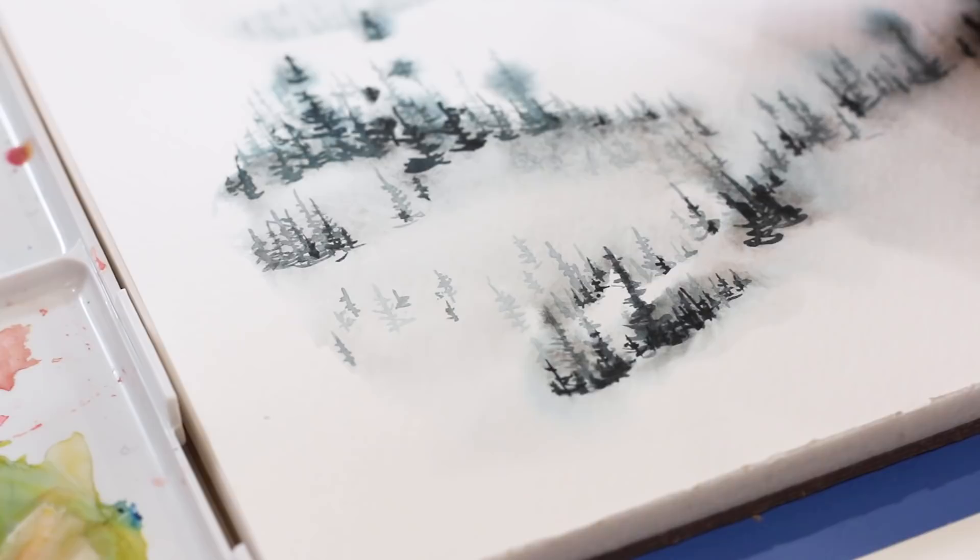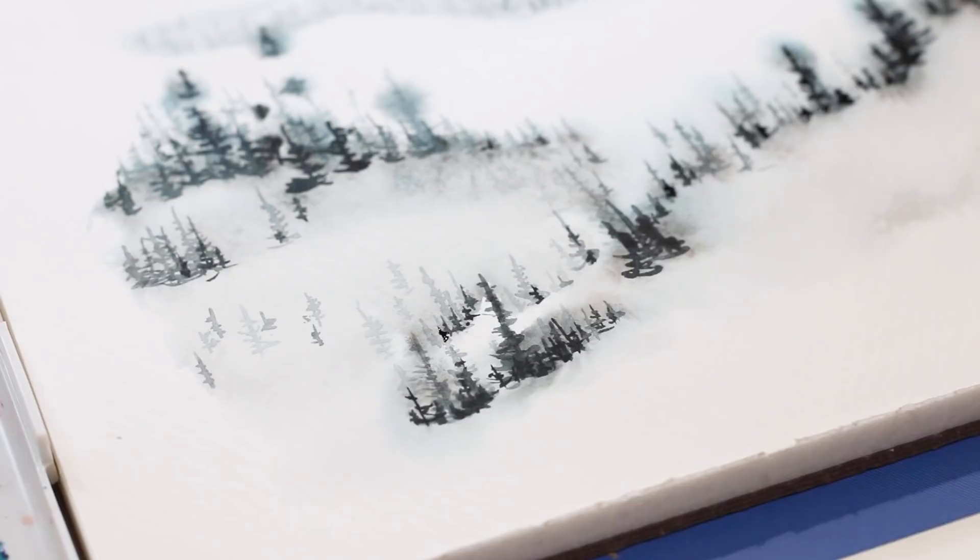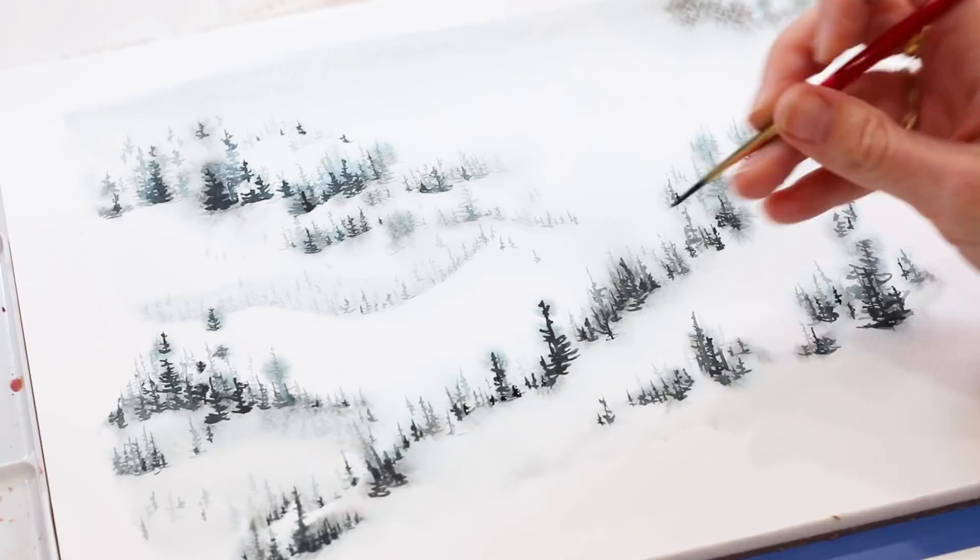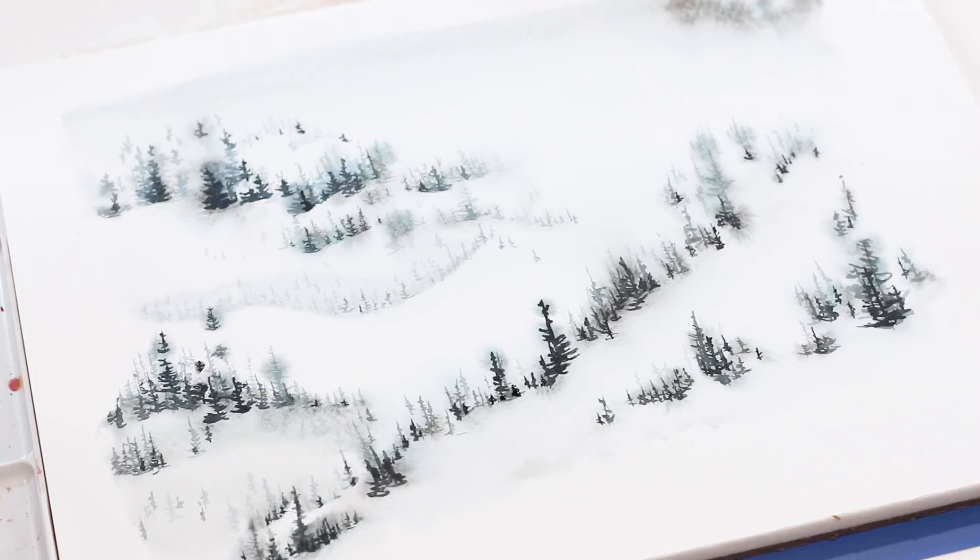Adding last little bits, the darkest layer, to bring the foreground forward and add even more contrast so the background looks even fainter, further away. Making sure these dark bits don't land in the bright white areas. Just darkening that mixture with a little bit more black so that they really come forward.